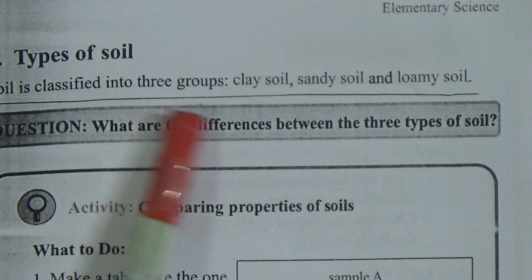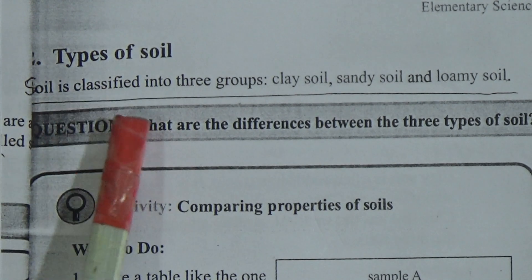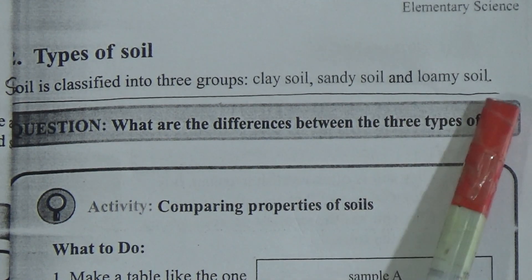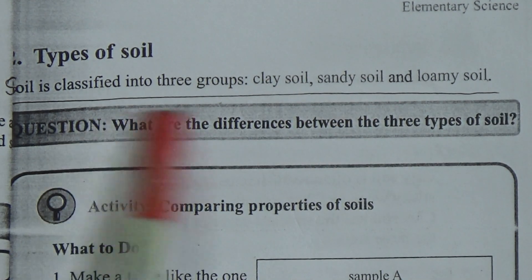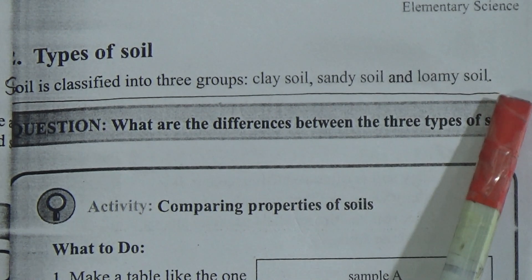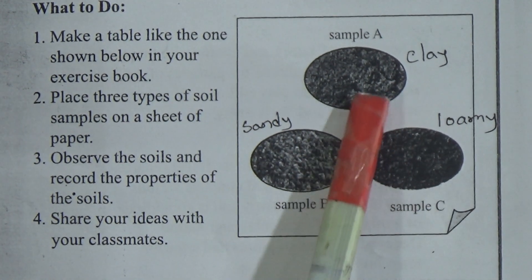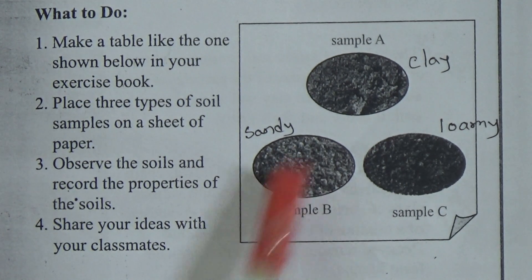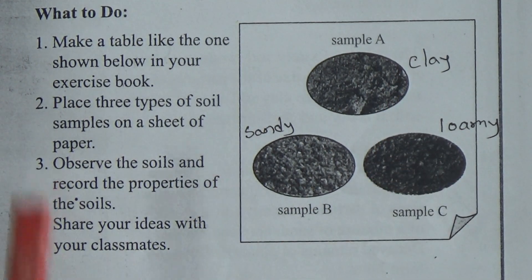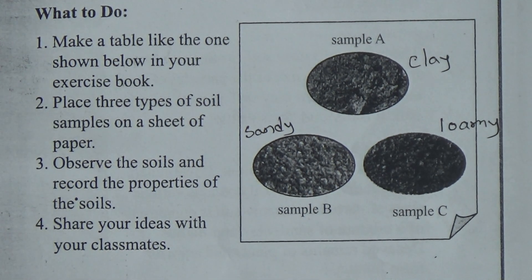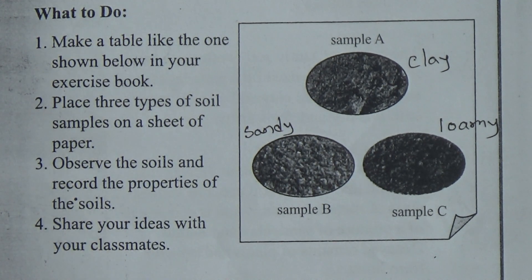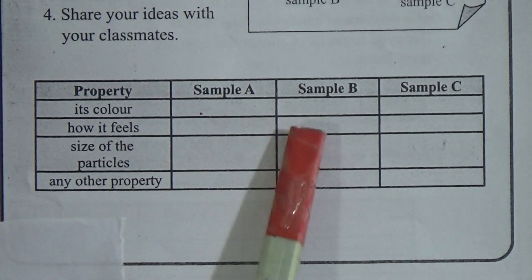Now, types of soil. Soil is classified into three groups — my dear students, underline this line. Soil is classified into three groups: clay soil, sandy soil, and loamy soil. We will discuss the comparing properties of soil. Here we have sample A, sample B, and sample C. Sample A is clay soil, sample B is sandy soil, and sample C is loamy soil. You will write the properties of different types of soil in this table.